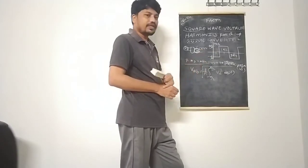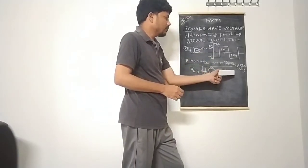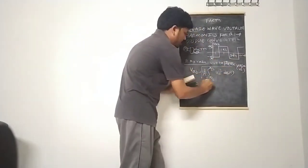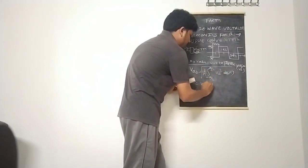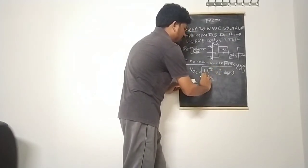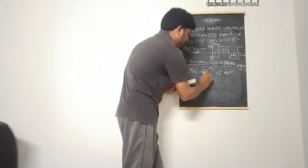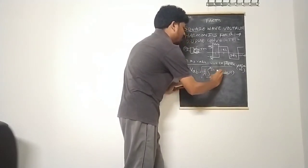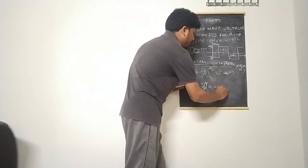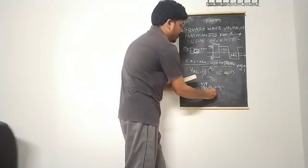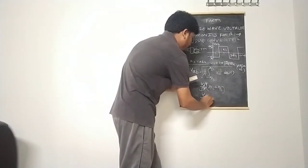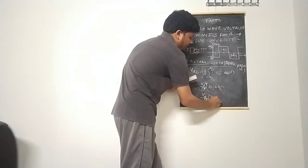Taking VDC² outside the integral, we get VDC² divided by π, with integration over d(ωt). Substituting the limits minus π/2 and plus π/2: the result gives VDC² divided by π, multiplied by the difference of limits. We get π/2 plus π/2 equals 2π/2, and the 2s cancel, leaving root of π over π, which simplifies.